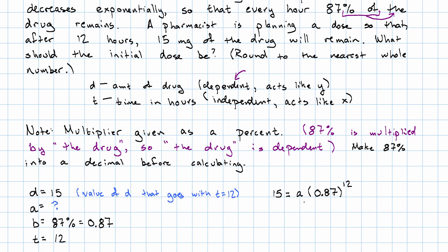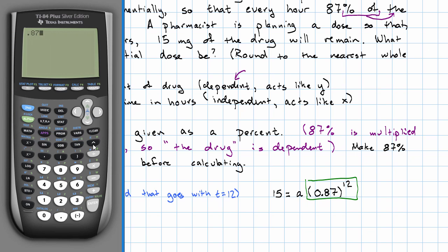Now, when I go to the calculator, I can put this in. I type in 0.87 to the 12th power. That's an unpleasant number. It's just a number, though.